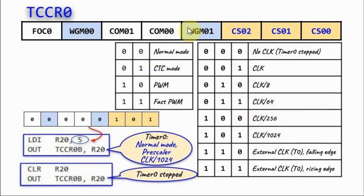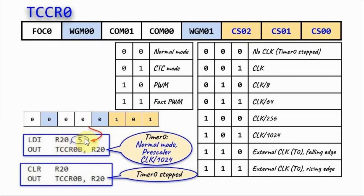For the mode of operation, a value of 00 gives normal mode, 01 gives CTC mode (clear timer on compare match), and 10 or 11 gives pulse width modulation. As an example, storing a byte with bits 101 in TCCR sets the clock source to clock/1024 and 00 sets normal mode. The assembly code loads the value 5 into R20, then copies it to the control register using OUT. To stop the timer, send 0 to the control register.